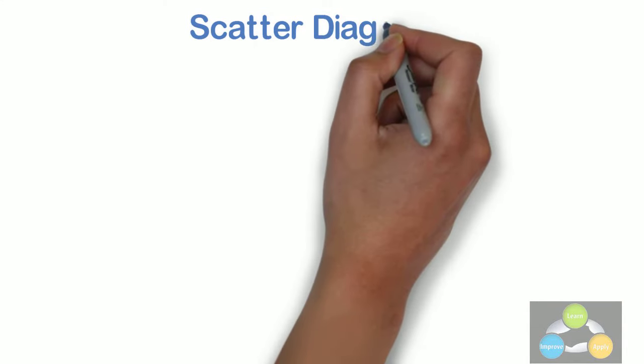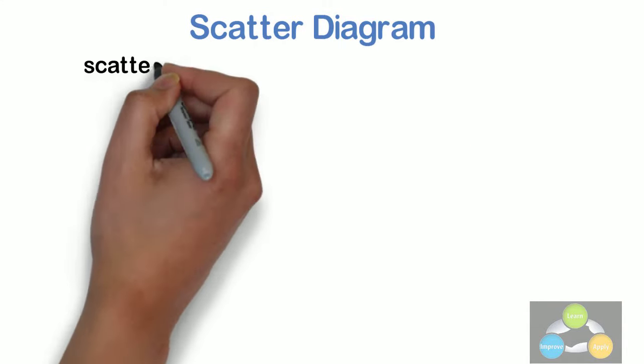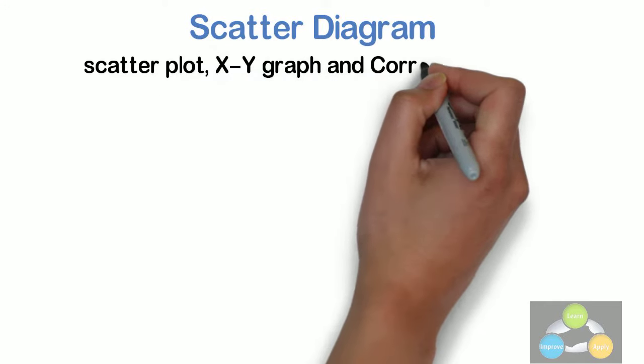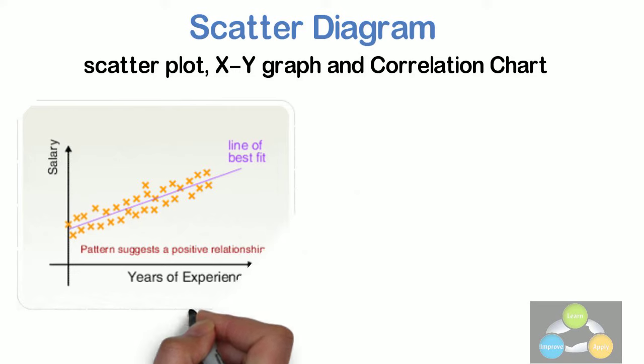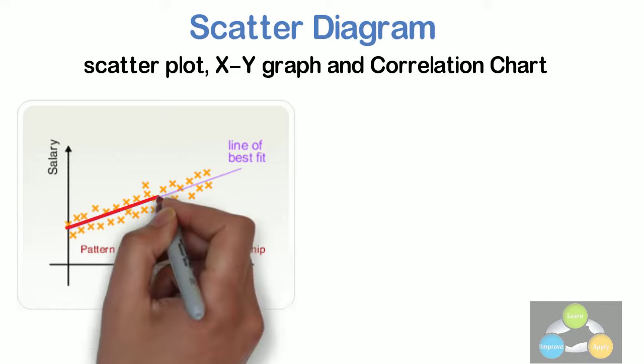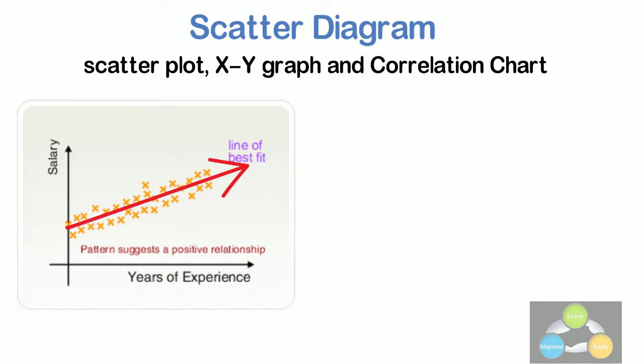Scatter diagram. It is also called scatter plot, XY graph and correlation chart. The scatter diagram graphs pairs of numerical data with one variable on each axis to look for a relationship between them. If the variables are correlated, the points will fall along a line or curve. The better the correlation, the tighter the points will hug the line.